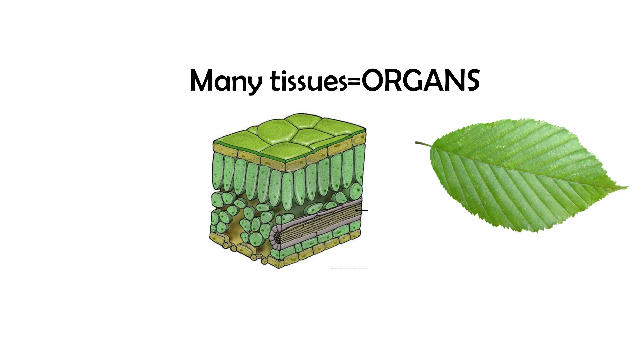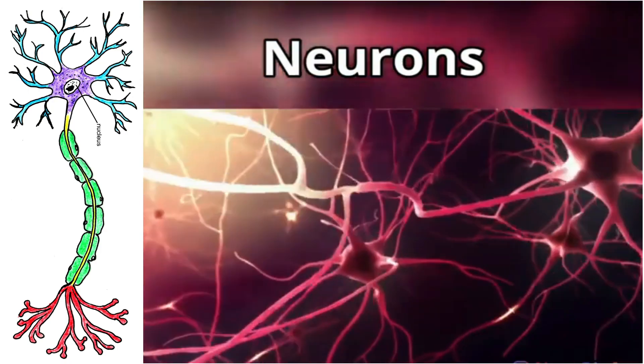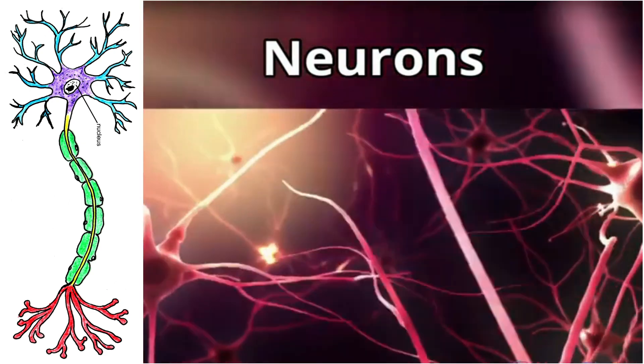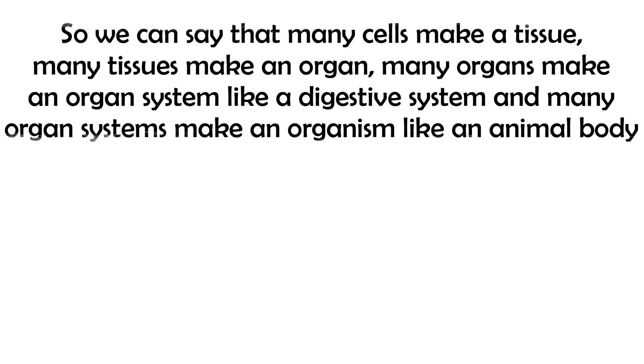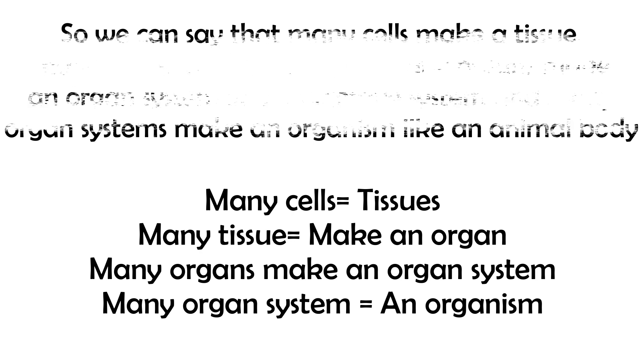A tissue is mainly made up of many same cells. Many same cells come together and make a tissue. Like a brain, brain will have only brain cells known as neurons. So we can say that many cells make a tissue. Many tissues make an organ. Many organs make an organ system like digestive system, nervous system, excretory system, respiratory system, etc. So these are the organ systems which make an organism like human being or other animals.